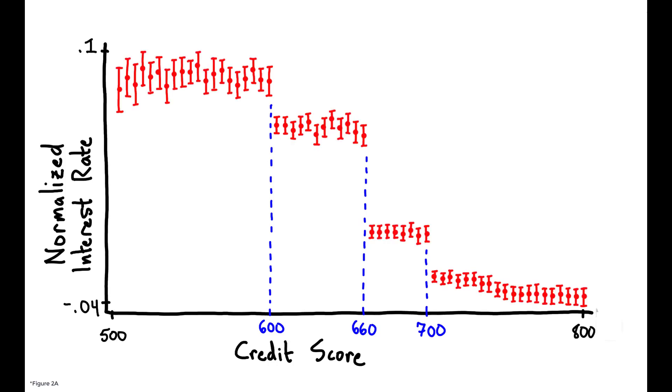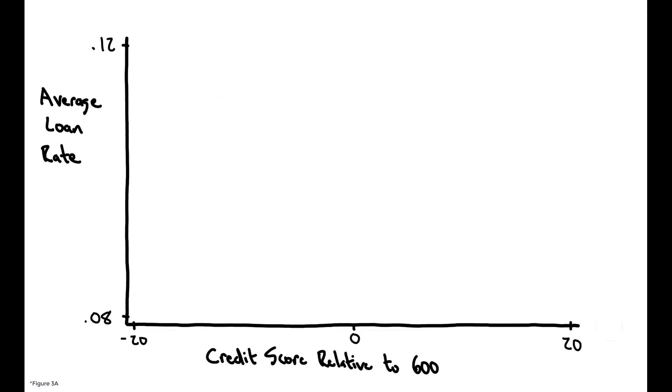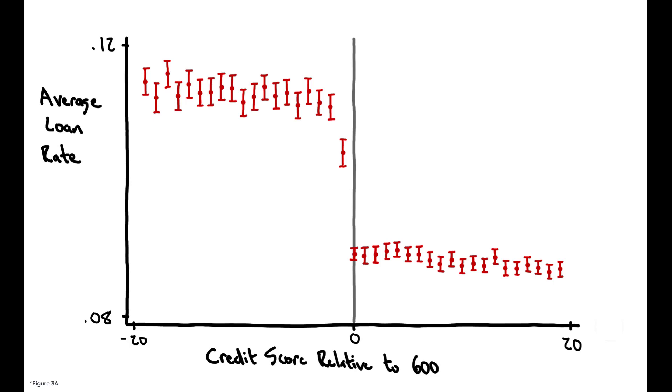These pricing rules are not unique to this particular lender, and their existence across many others gives rise to similar discontinuities in the aggregate. This figure draws from a sample of over 550,000 loans from 57 institutions with similar pricing policies, and shows that here, as well,